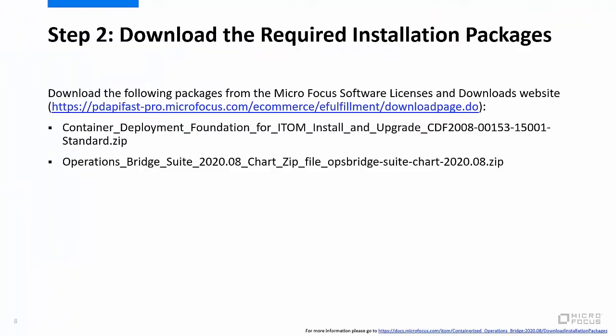Step 2 is to download the required installation packages. Download the required installation packages from the URL shown on the screen. After the download has completed, choose a directory as your temporary install directory, such as var-temp, on the master node. This directory must have at least 15GB of free space. Copy the downloaded packages to this directory.